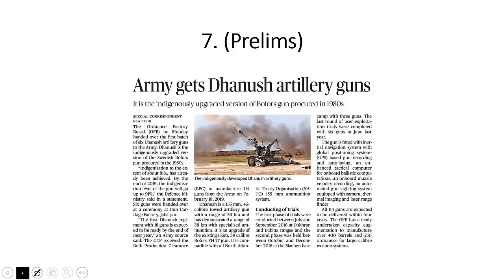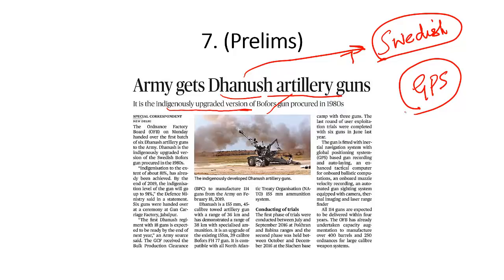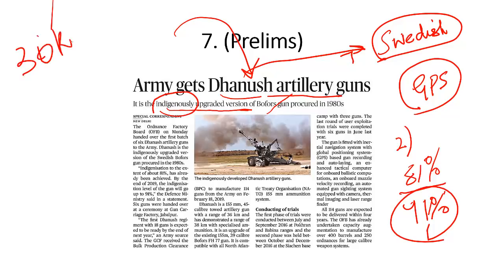Now let's look at another news on page number seven: 'Army gets Dhanush artillery guns.' What is the Dhanush artillery gun? It is an indigenously upgraded version of Bofors guns, which were procured in the 1980s from a Swedish manufacturer. Dhanush is fitted with a global positioning system — very important for your prelims examination. It is not fully indigenous: currently 81% indigenous, and by end of 2019 it will be 91% indigenous. The range of the Dhanush gun is 36 kilometres.